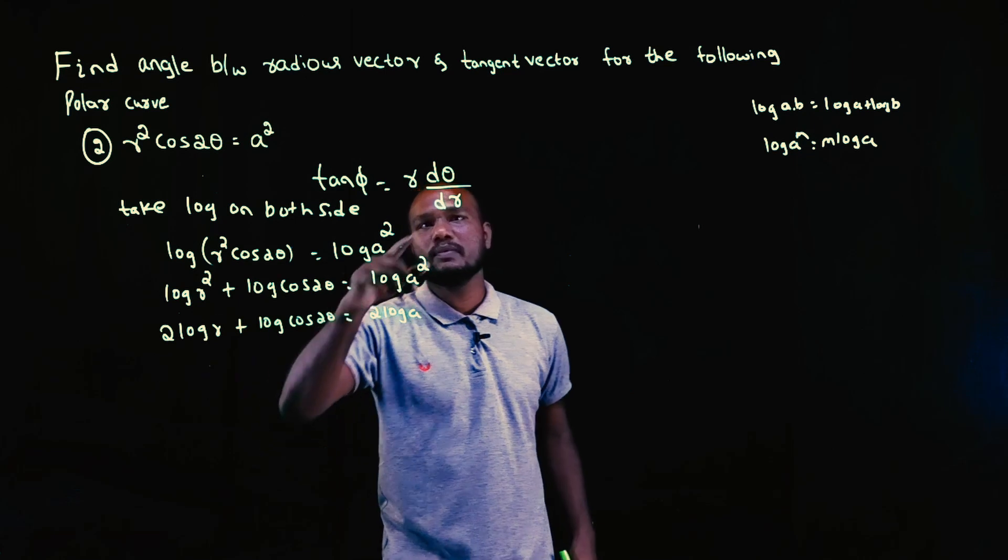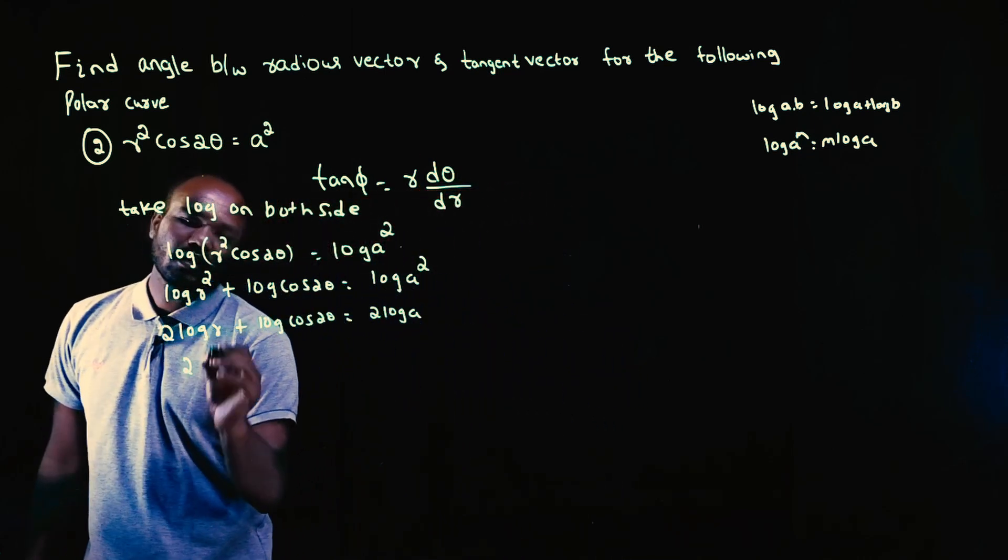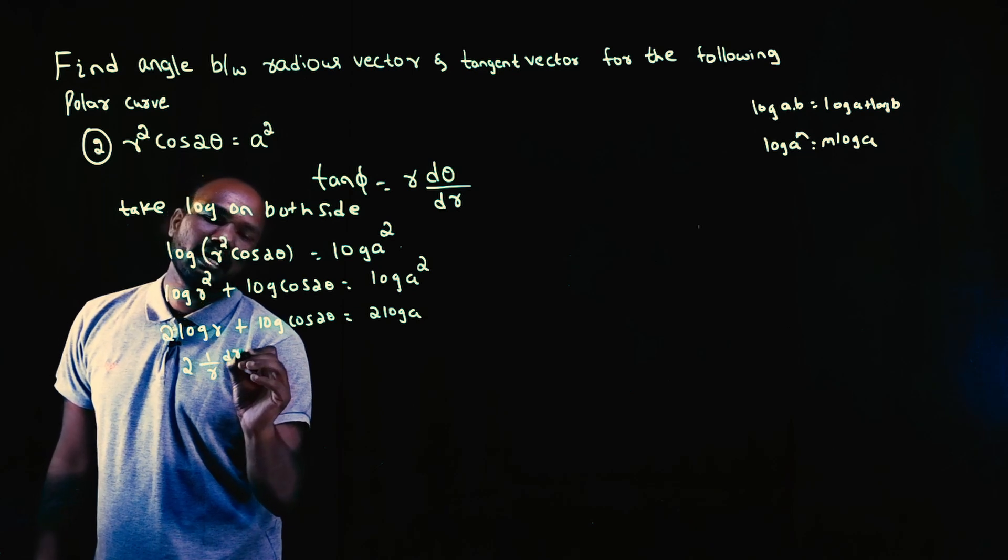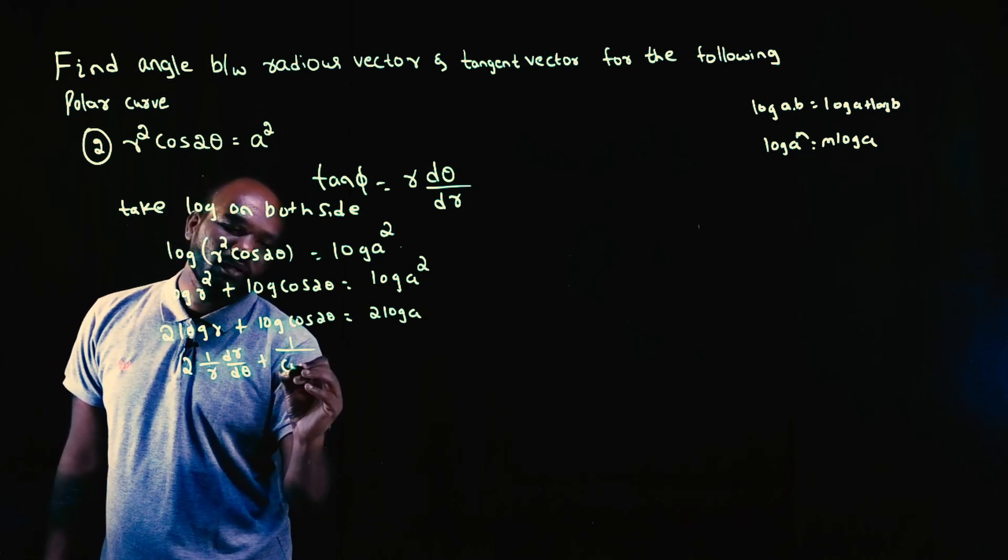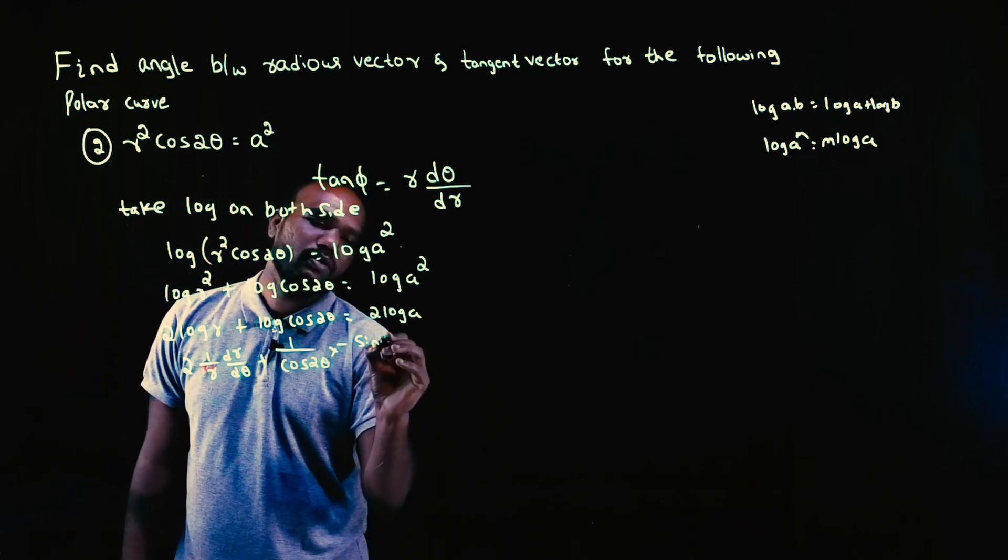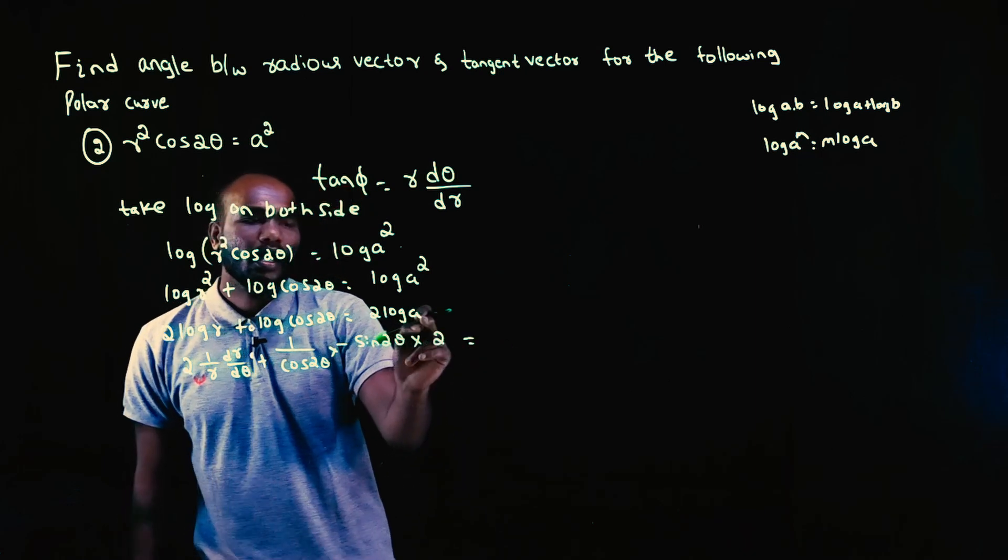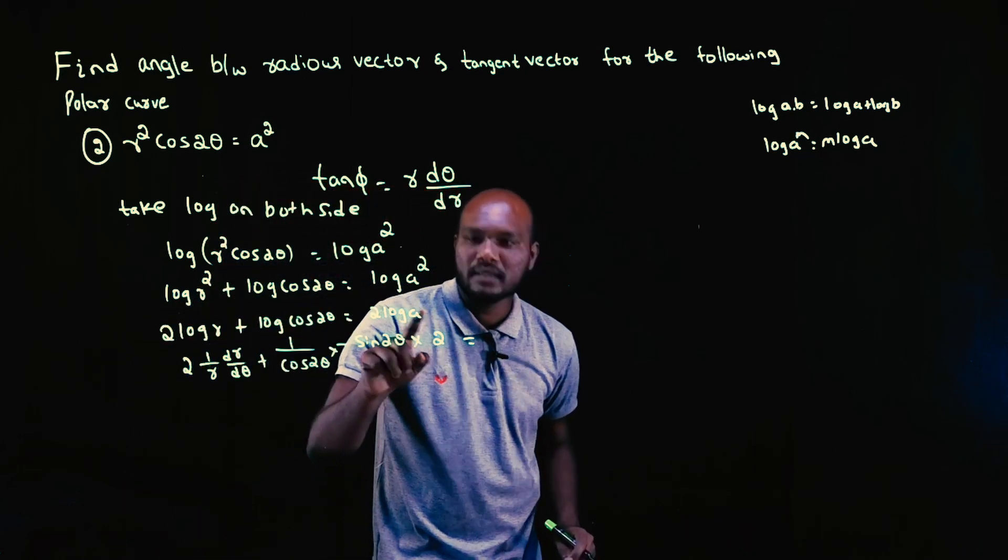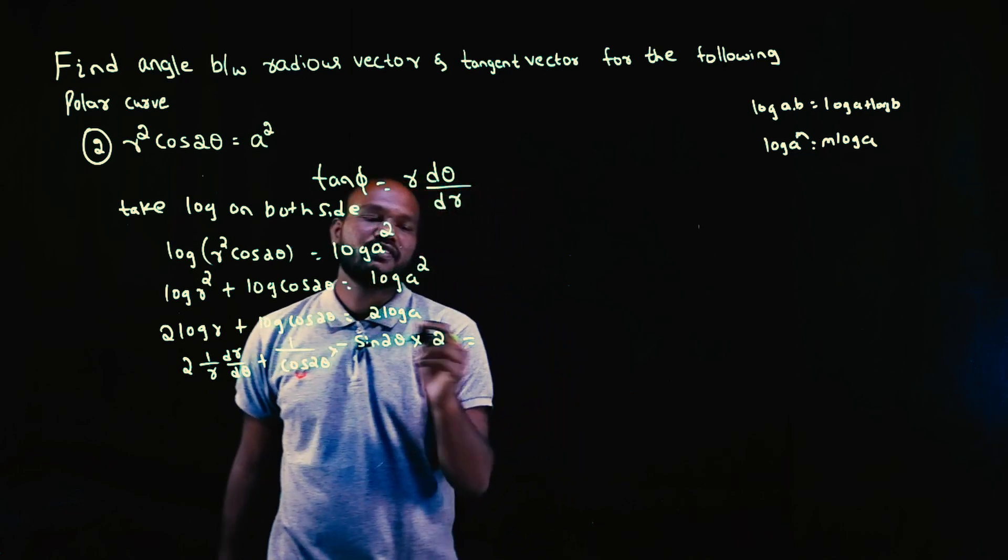Next, we have to differentiate because we want dθ/dr. So let's differentiate this. Log(r) differentiation is (1/r)(dr/dθ) plus log(cos 2θ) differentiation gives minus sin(2θ) times 2 equals 2 log(a). A is a number, so its differentiation is 0.